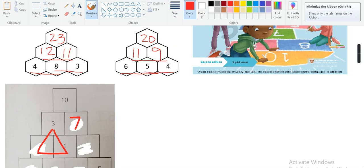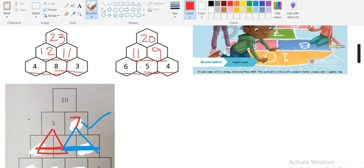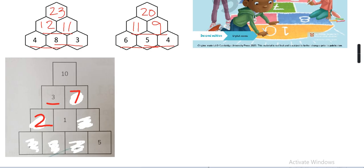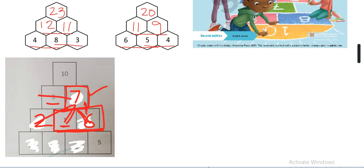These two bricks will be the base for number 7, and these two bricks will be the base for number 3. What will I add to 1 to make number 3? I will put 2 here — 2 plus 1 is number 3. What will I add to 1 to make number 7? I will add number 6, because these two bricks are the base for number 7 only — number 7 has no link with number 2 or number 3.